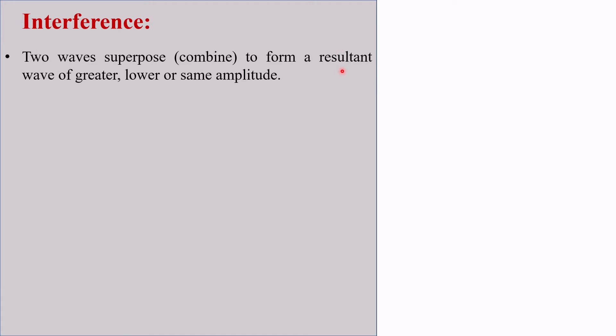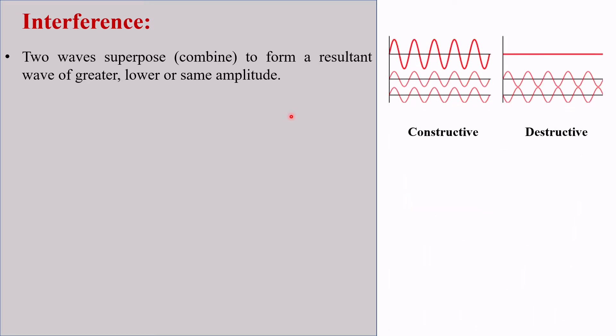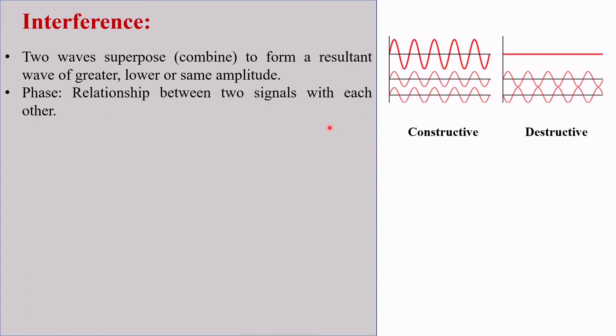Because you need to know about interference first before starting phase contrast microscopy. I am describing it briefly here. Interference is a phenomenon in which two waves combine to form a resultant wave of greater, lower, or same amplitude. The relationship between two waves with each other is called phase.